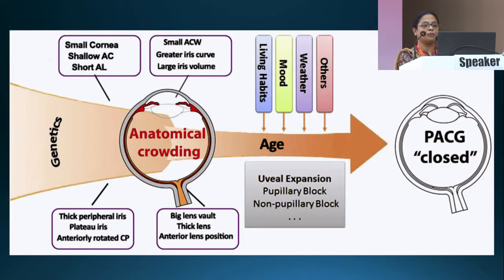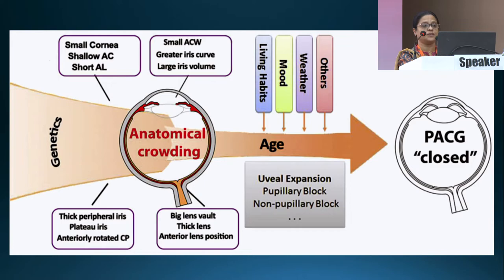To sum up all these pathogenic factors: it starts at the genetic level, progressing through anatomical features of angle crowding, iris changes, lens changes with uveal expansion, and certain living habits, mood, weather, and other factors. Combined with increasing age, these all lead to the development of primary angle closure disease.